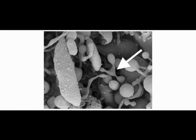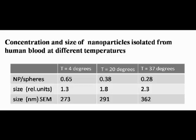The observed structures indicate that fragmentation of blood cells occurs during the isolation process. Thin necks were formed which are torn by centrifugal shear stress. Population studies, including 49 healthy volunteers, show that the concentration was lower at higher temperatures.